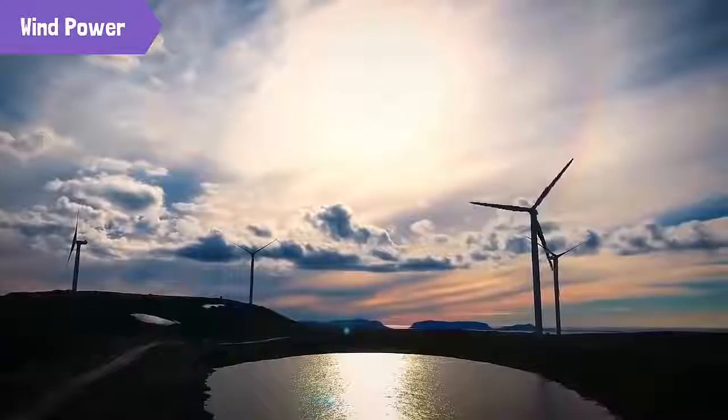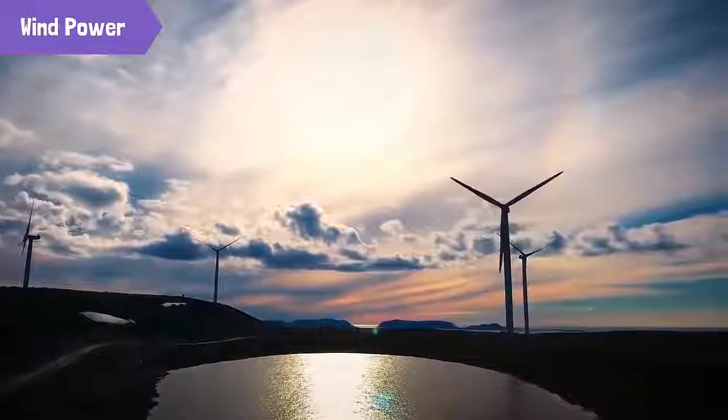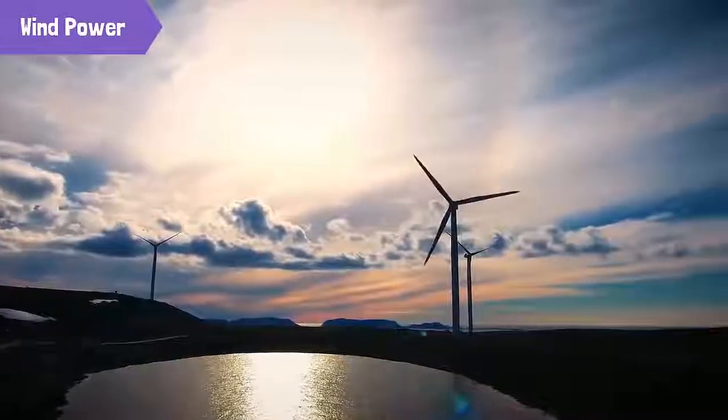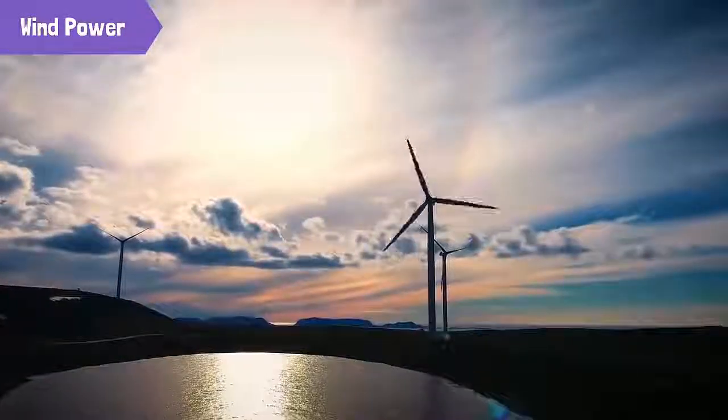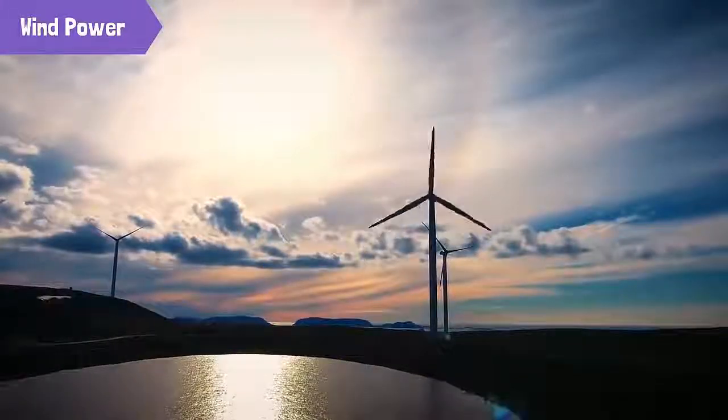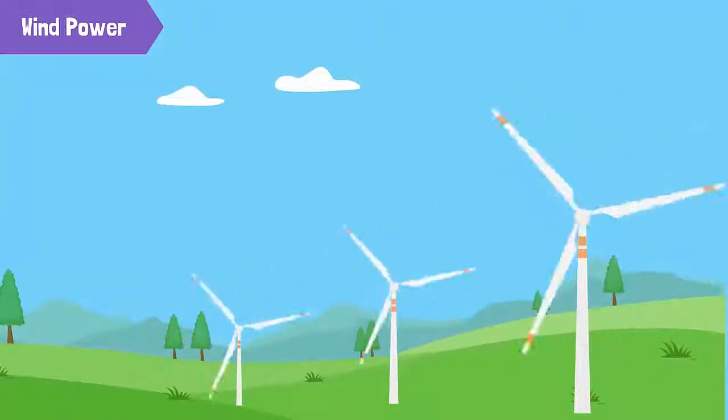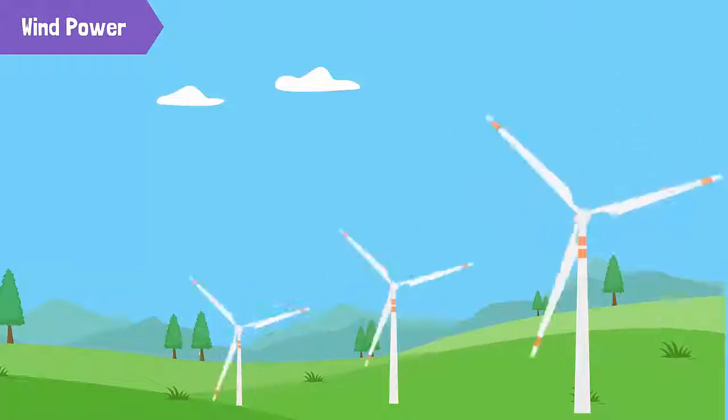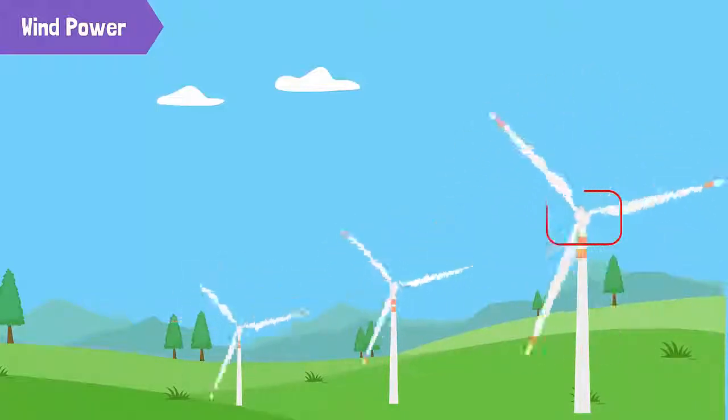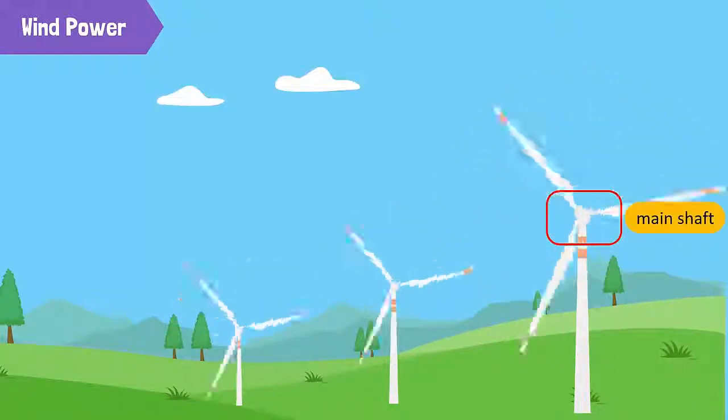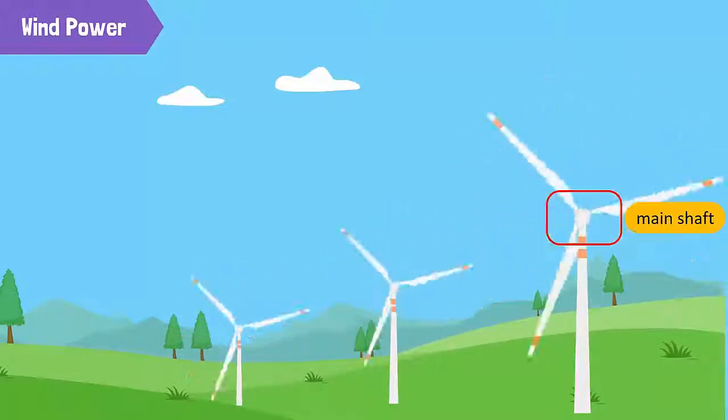Wind turbines are located in areas with strong wind, such as hilltops. They usually have three blades. The wind turns the blades around a rotor. The rotor is connected to the main shaft, which spins a turbine inside the generator to create electricity.